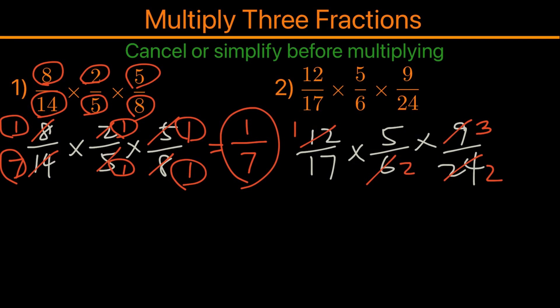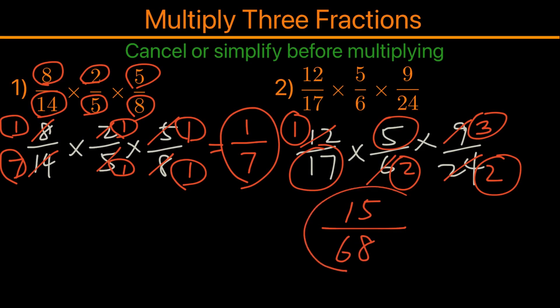So we're going to take 1 times 5 times 3, then we're going to take 17 times 2 times 2. So 1 times 5 times 3 is 15, and 17 times 2 times 2 is 68. So the answer is 15 over 68.